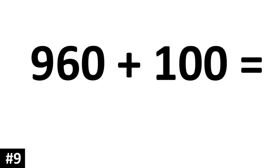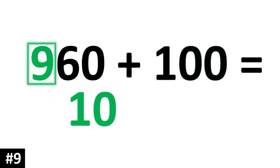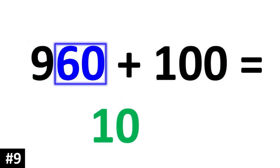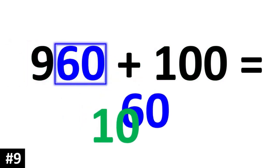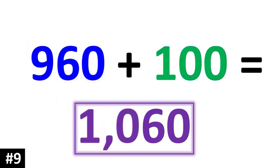How about this one? 960 plus 100. First we find the hundreds digit, which is a 9, and it's going to go up by 1. One number up from 9 is 10. The other numbers stay the same, so we bring down the 60, and we have 1,060.